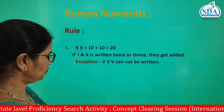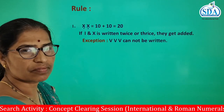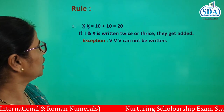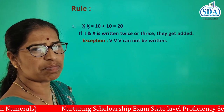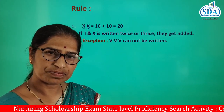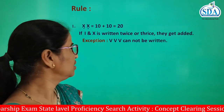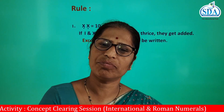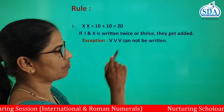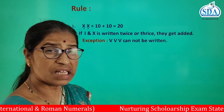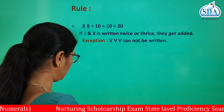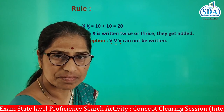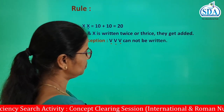First rule: the symbol X is written twice here, and the value of that symbol is 10 plus 10, which equals 20. The rule is — if I and X are written twice or thrice, the value of that symbol gets added. Also note that the symbol for number 5, which is V, cannot be written twice or more.